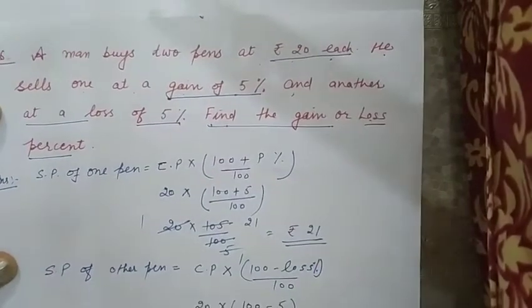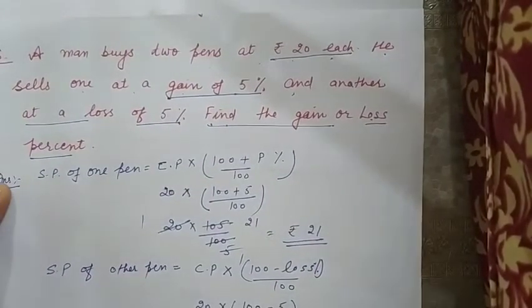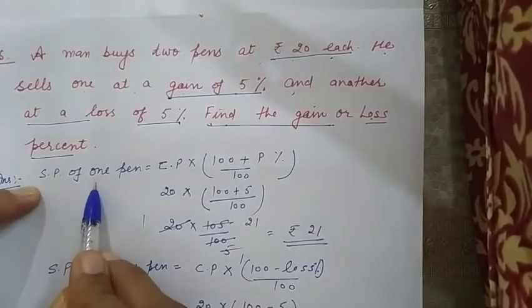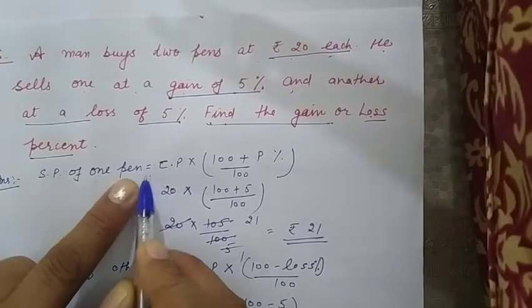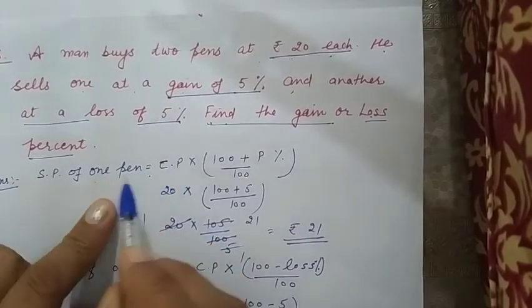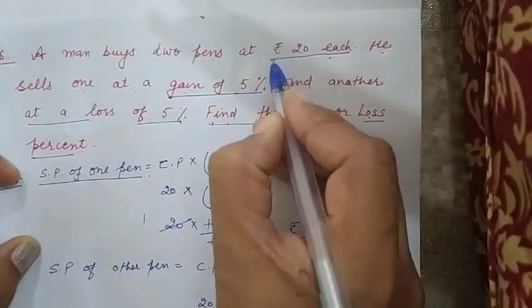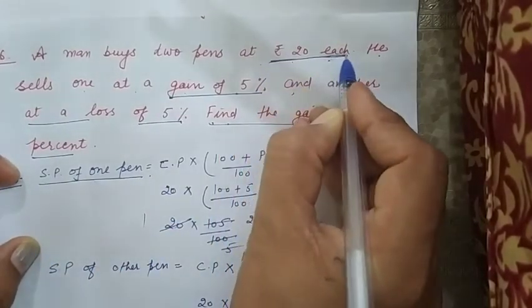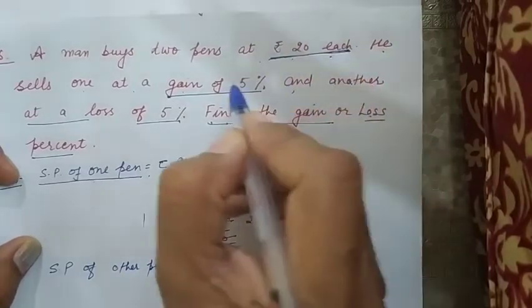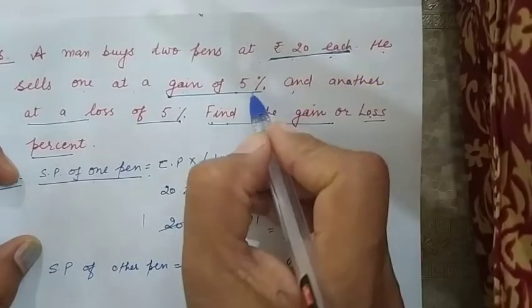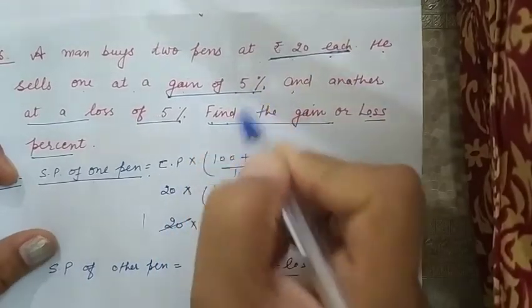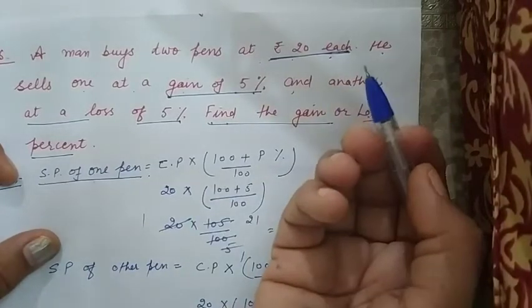Toh aapko yeh bata na hai ki uska gain or loss kitna hai. Selling price of one pen yeh hume dhiya hoa hai. Selling price of one pen hume find out karna hai. Bache cost price toh aapko dhiya hoa hai. 20 rupiz. Har ek pen ki cost 20 rupiz hai. Do pen hai, doonok ki cost 20 rupiz hai. Eek ko 5% profit per beseja. Or eek ko 5% loss per beseja.